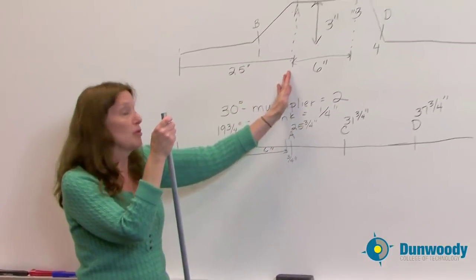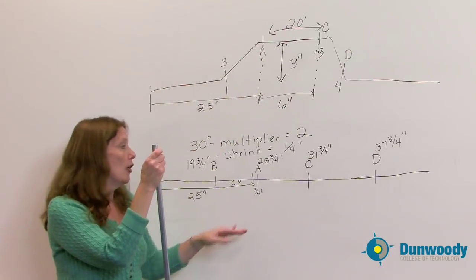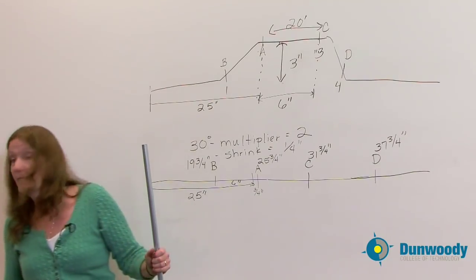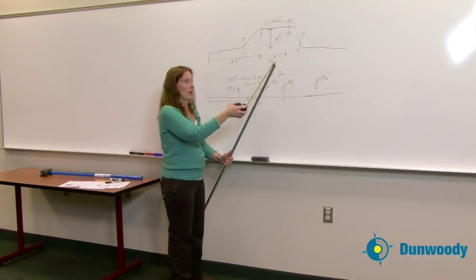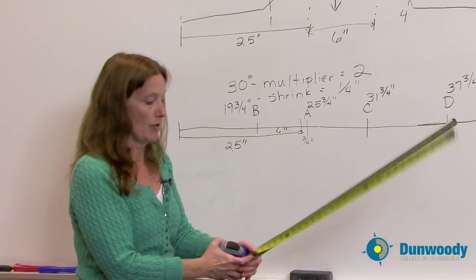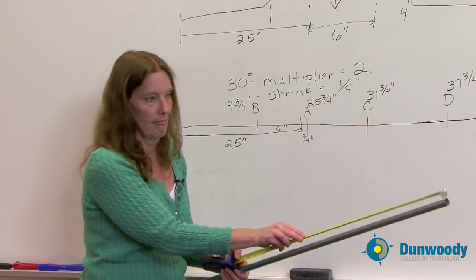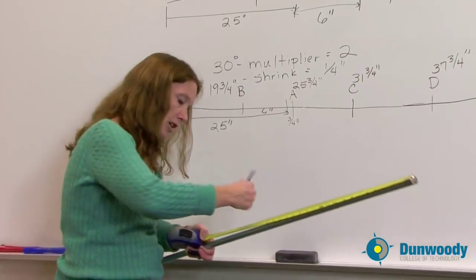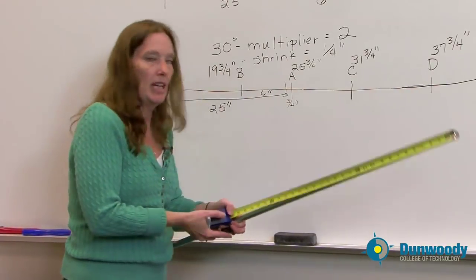We said we had a three inch obstruction 25 inches from the end of the bender, and at that point we mark our A. However, we had to keep in mind our three quarter of an inch shrink, so we added that to our first number. I'm going to take my tape measure and I'm going to mark it at twenty five and three quarters of an inch. I take my sharpie and go to twenty five and three quarters of an inch. This will be my mark A.